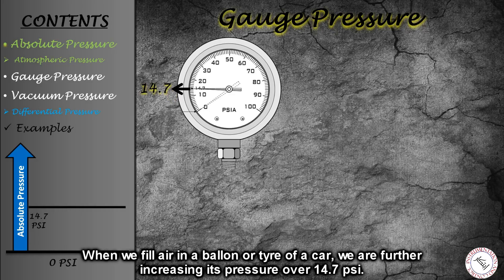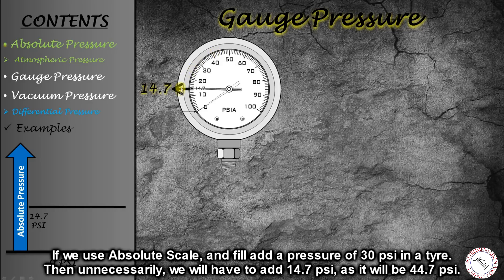If we use the absolute pressure measurement scale, then at the Earth's surface it will read 14.7 psi when nothing extra is applied — shown as 0.0 psi on a gauge. If we inflate a car tire to 30 psi, then 14.7 psi plus 30 psi gives a total absolute pressure of 44.7 psi.